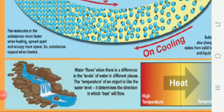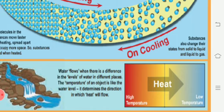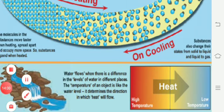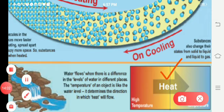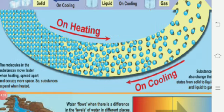Just as water flows when there is a difference in water levels, temperature determines the direction of heat flow from one object to another. Heat always flows from higher temperature to lower temperature — this is very important.